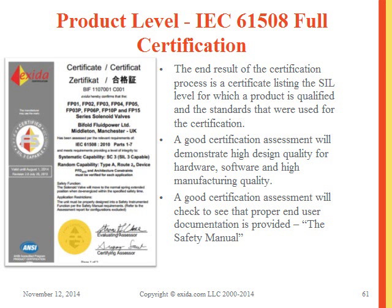The end result of a full certification process is a product certificate and an assessment report. The certificate lists the SIL level for which the product was qualified. Products can receive full certifications with restrictions — look for those in the safety manual. On the back of the certificate, Exida lists the dangerous and safe failure rates. Look for both — you don't want something with acceptable dangerous failure rates but safe failures through the roof, as that will result in too many spurious trips, plant shutdowns, and wasted time and money.